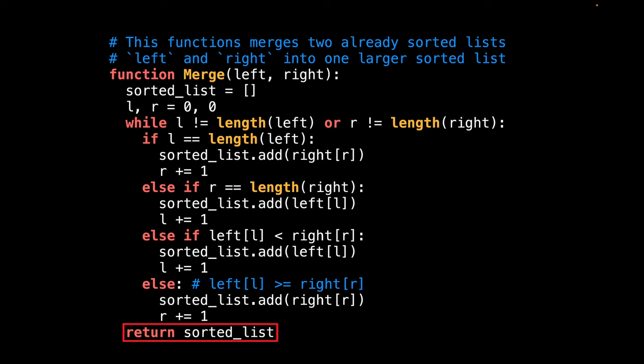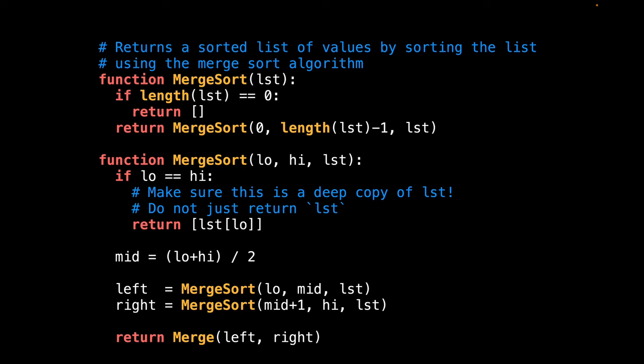After merging the list together, return the sorted list from the merge function. And that's basically how merge sort works in a nutshell. And guys, that's all I have for now. Thank you for sticking around till the end. Please like this video if you learned something about merge sort and subscribe for more content. And I'll see you in the next one. Bye.